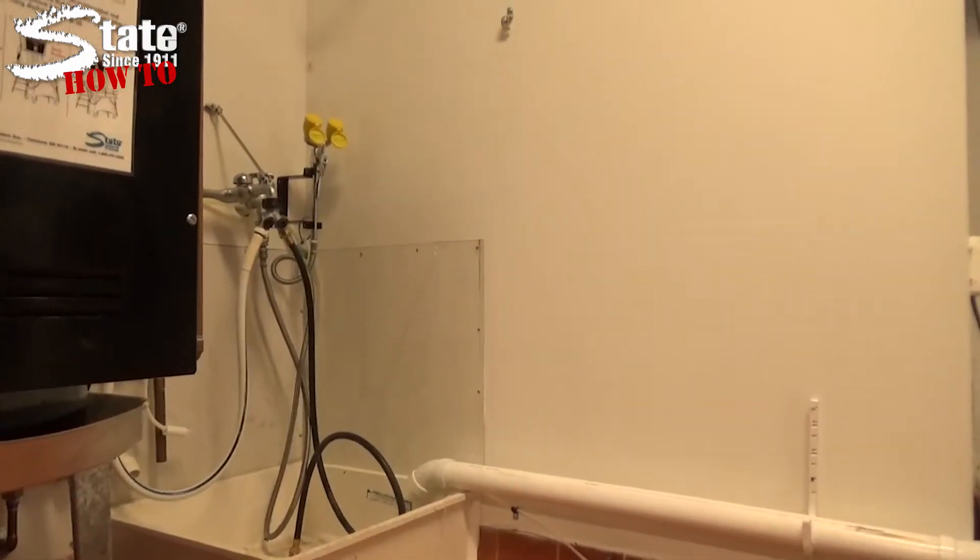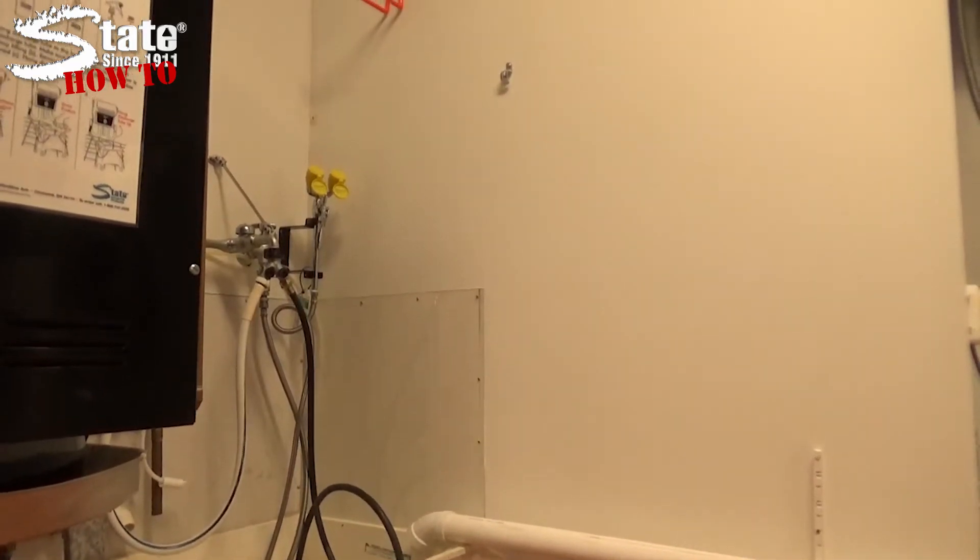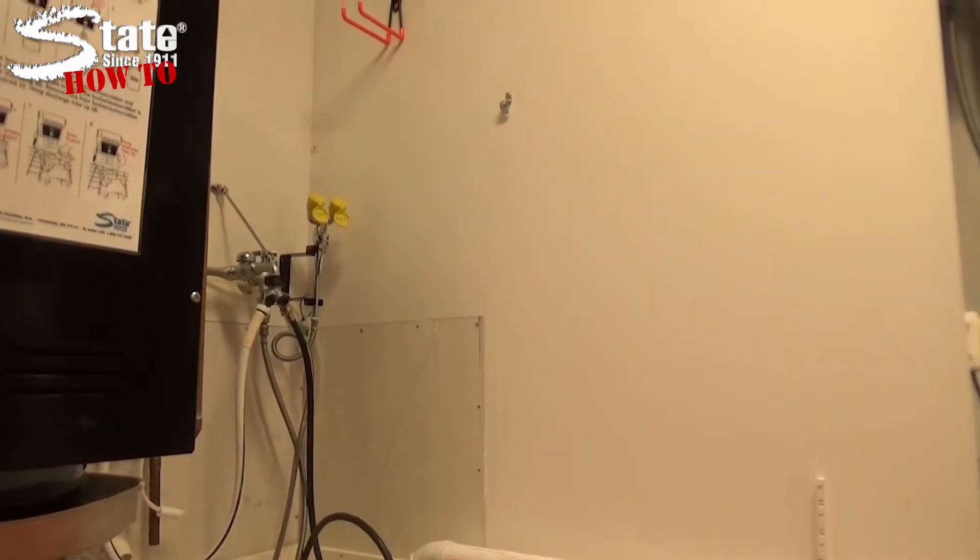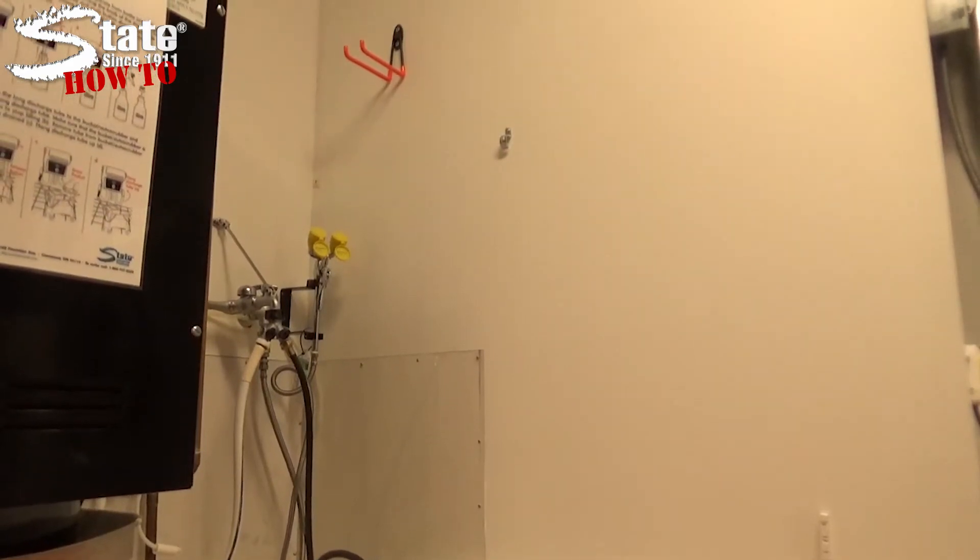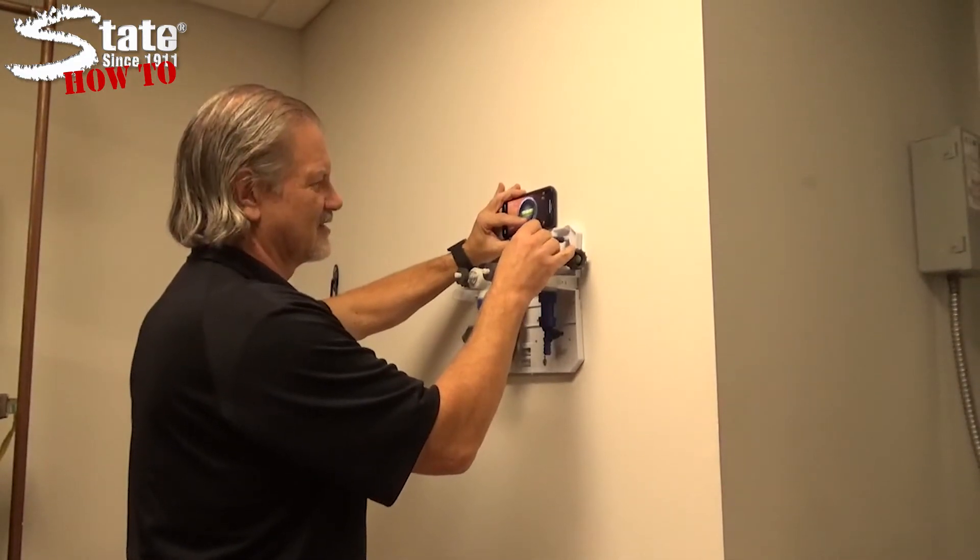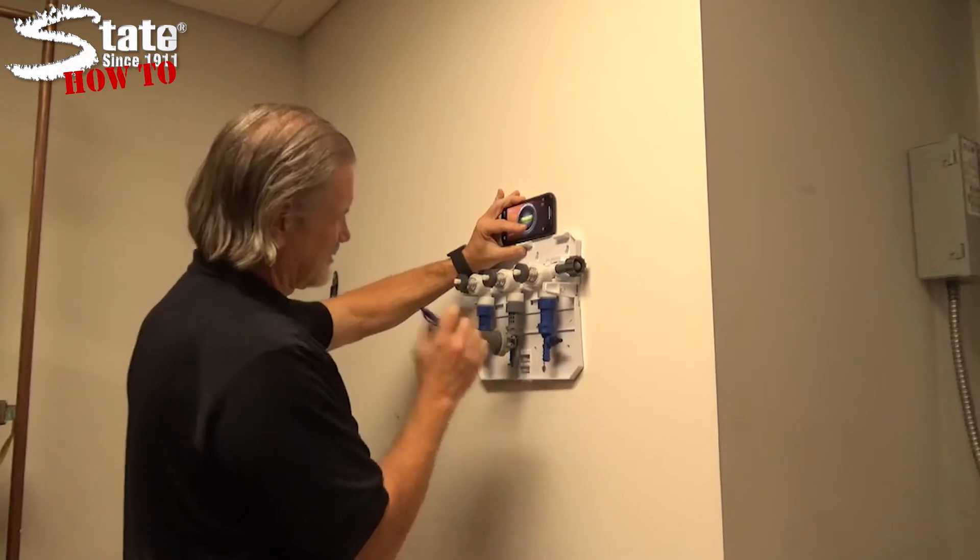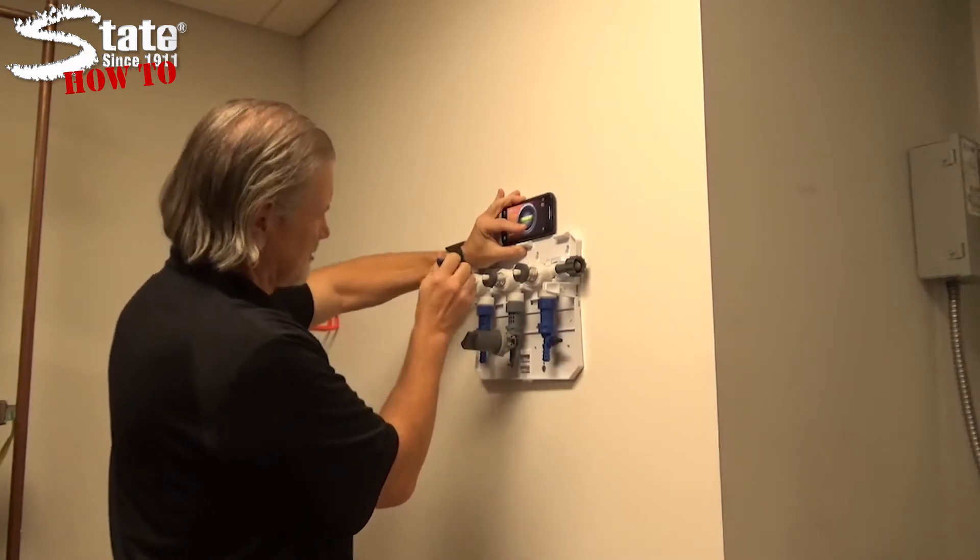First, it is essential to pick a location for the dispenser near a slop sink and a water source and select a spot on your wall where you are certain you will not drill into anything such as pipes or wiring. Using the backplate of the One Solution as a template, mark your holes on the wall. Ensure your unit will be straight by using a level during this step.